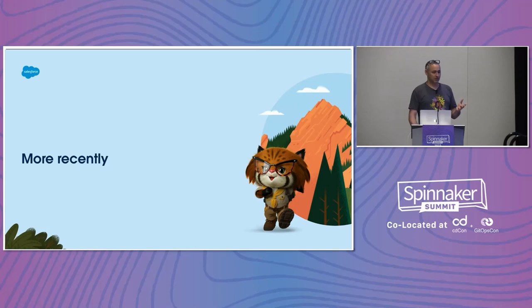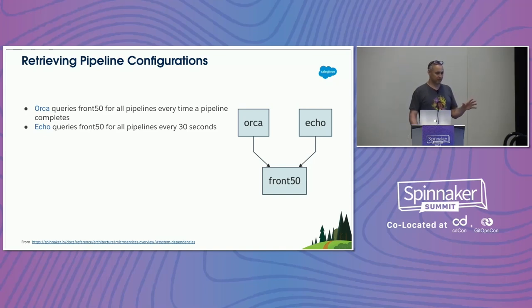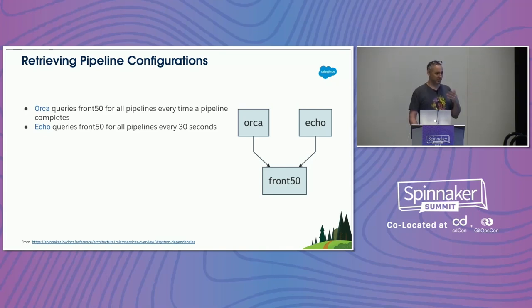Big shoutout to the service team, and specifically Tavis Paquette, who collected a lot of the metrics and data you're about to see. Once we had these access logs, we woke up one day and realized there was a hotspot — a really hot hotspot. It's all around retrieving pipeline configurations. The slide lays it out: every time a pipeline completes, Orca was querying for all the pipelines, and every 30 seconds every Echo pod was querying for all the pipelines — all the time. We were just warming the globe querying for all these pipelines and mostly dropping the results on the floor.